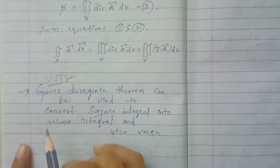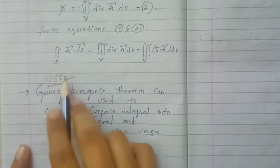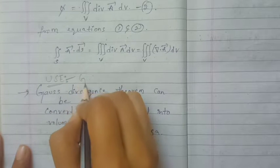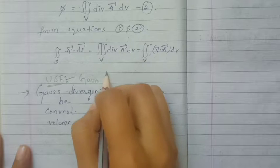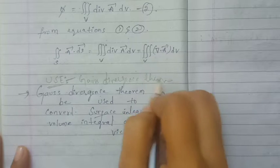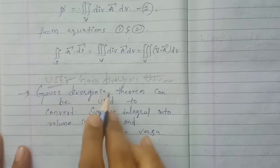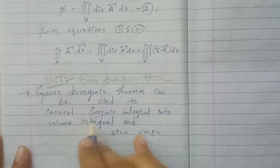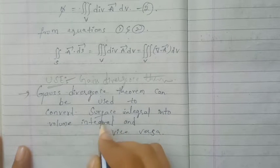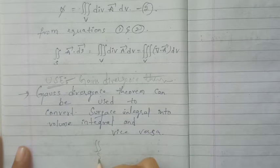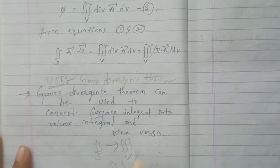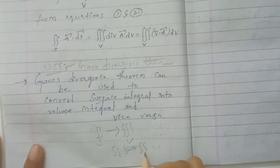So before continuing with its practical definition, let us know its main importance — that is, the use of Gauss Divergence Theorem. The main importance of Gauss Divergence Theorem is that it can be used to convert a surface integral to a volume integral and vice versa.